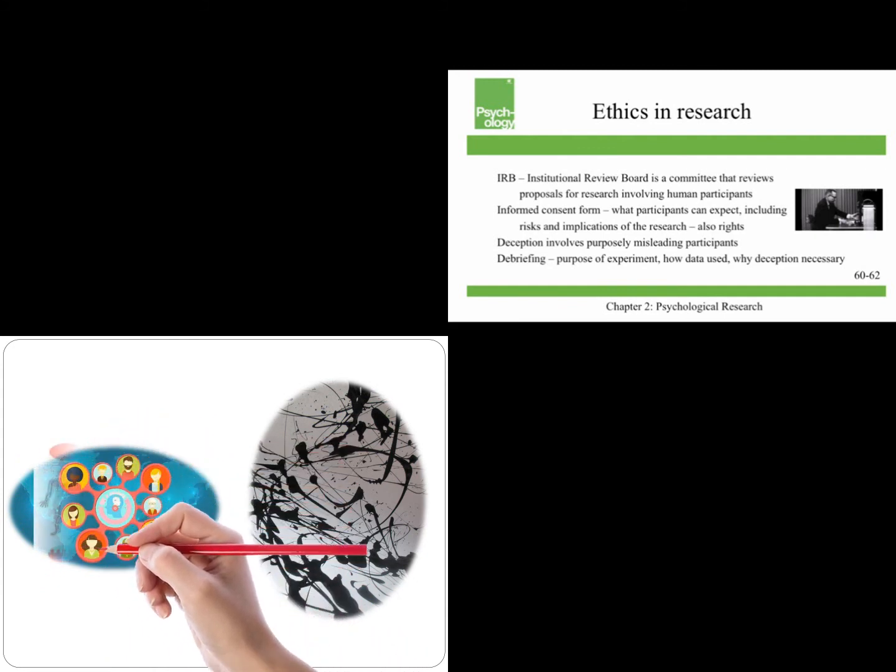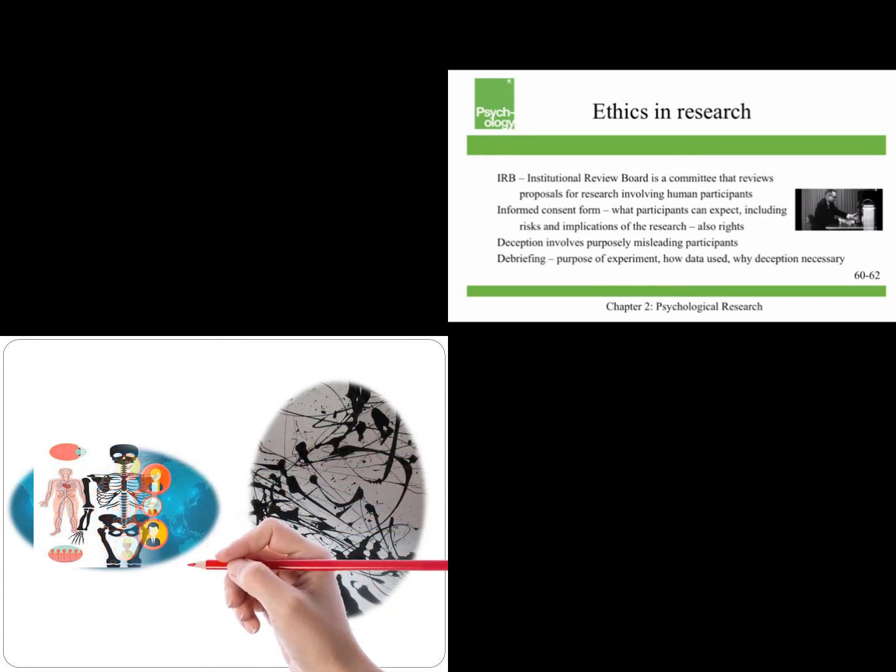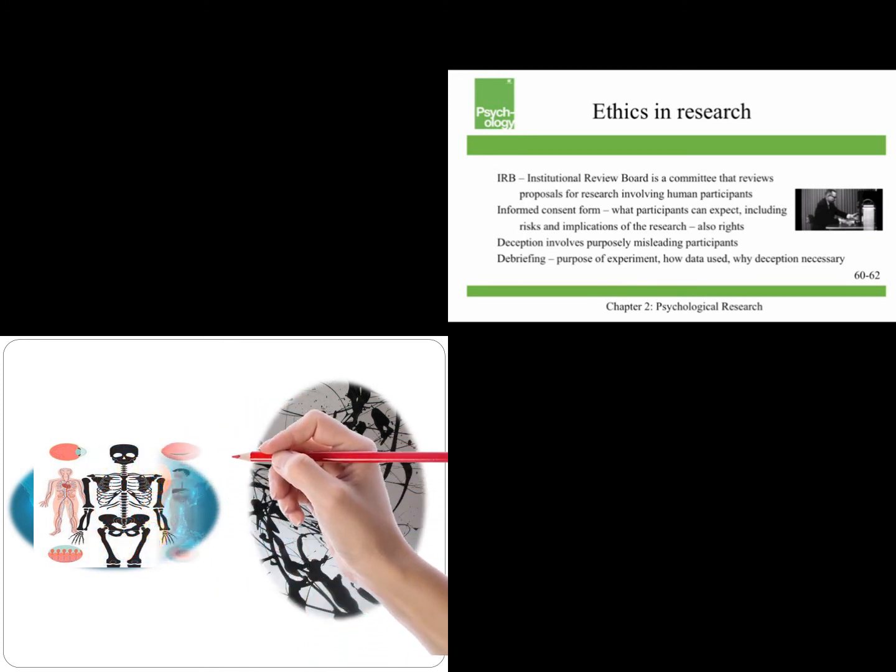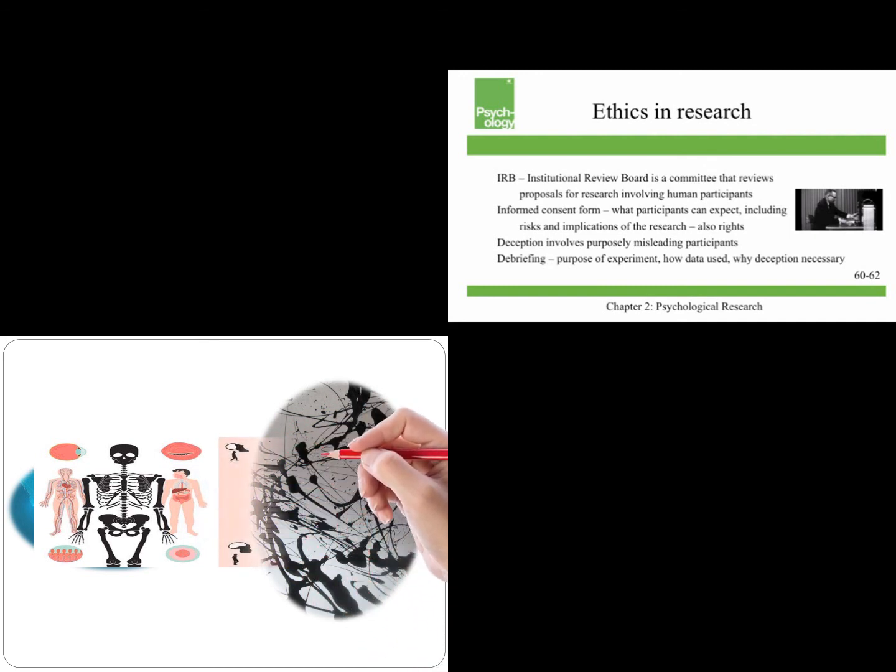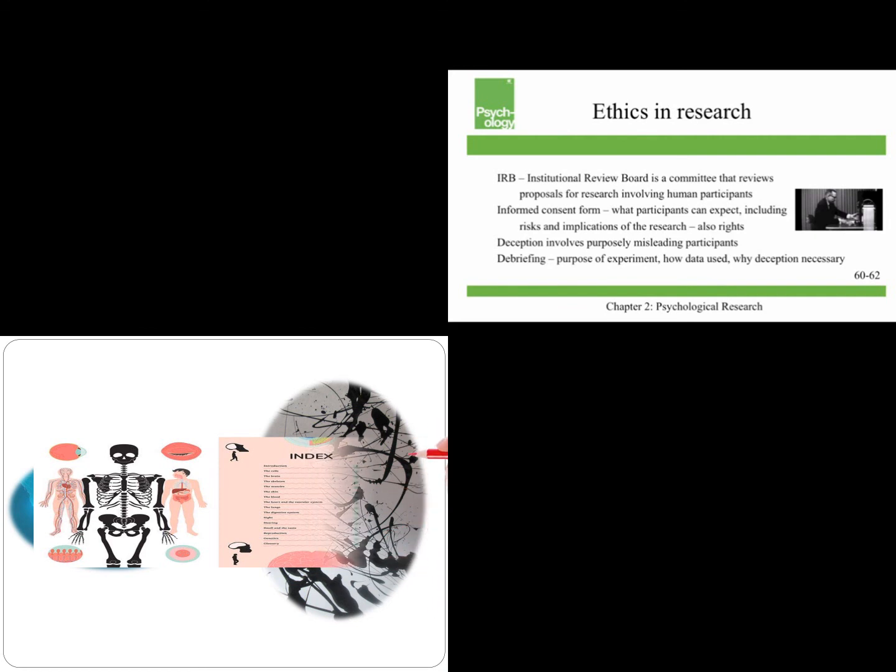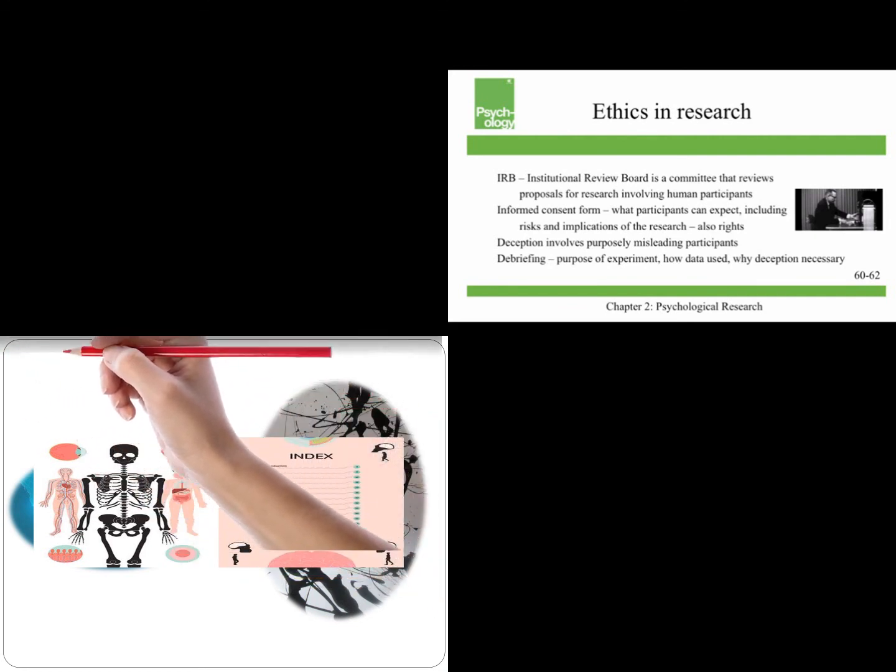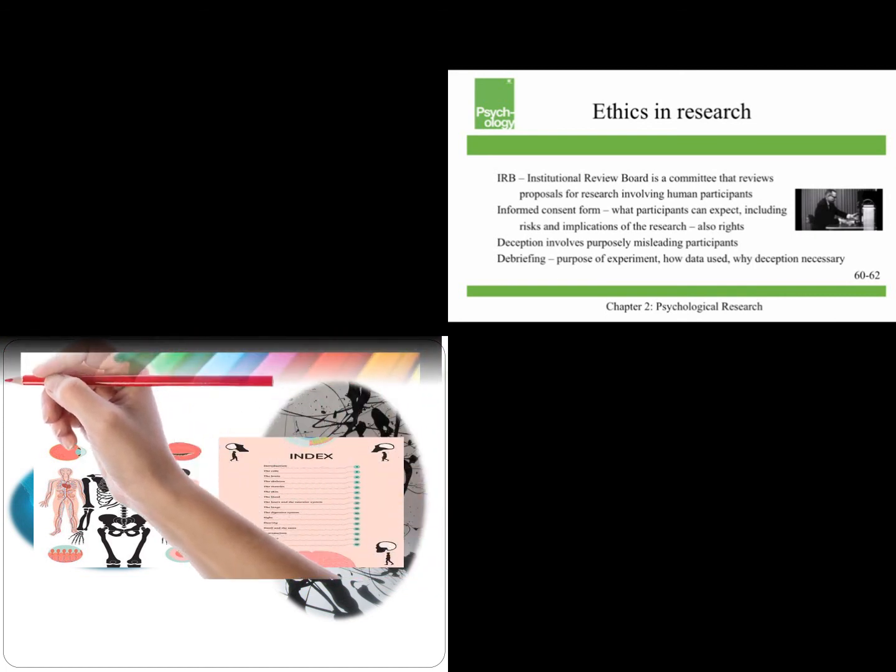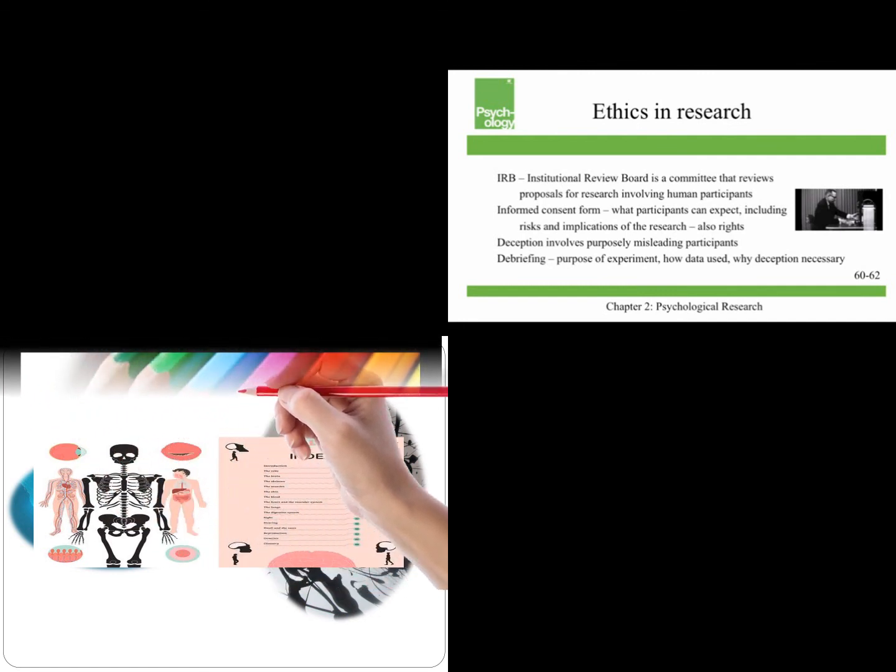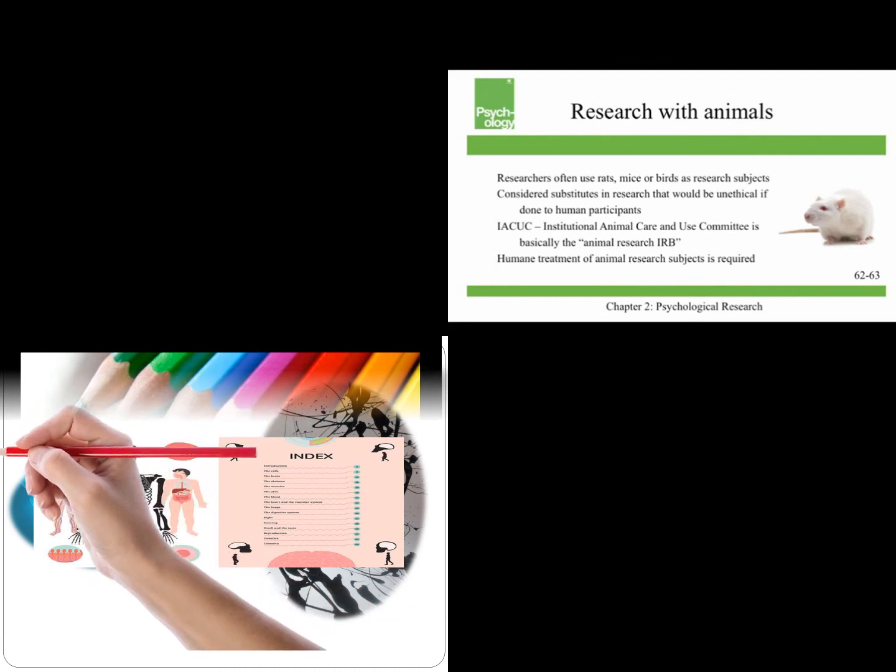Deception involves purposely misleading participants. The picture is actually from the Milgram obedience experiment, where participants were told that they were shocking people to death. They weren't really, they were being deceived. Debriefing happens at the conclusion of a study, and it tells participants what the purpose of the experiment was, how the data was used, and if deception was used, why it was necessary.